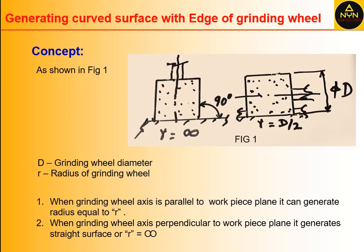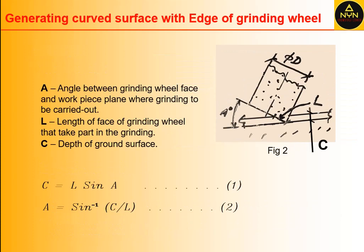To make this concept useful, we formulate the parameters involved. In Figure 2, A is the angle between the grinding wheel face and workpiece plane where grinding is to be carried out, L is the length of the face of the grinding wheel that takes part in grinding, and C is the depth of the ground surface. Then C = L sin A (equation 1), and A = sin⁻¹(C/L) (equation 2).